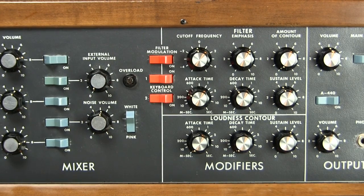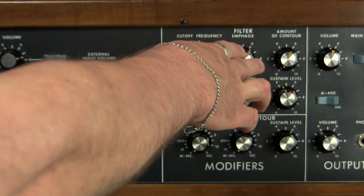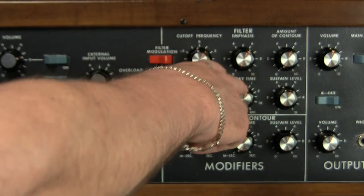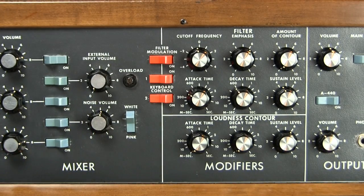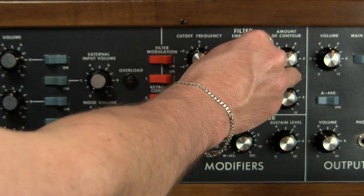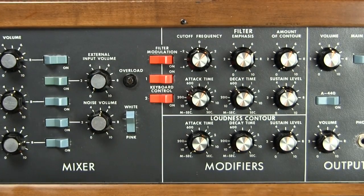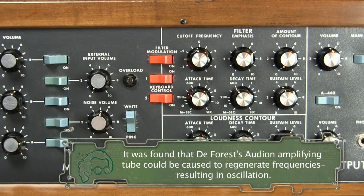Filter self-oscillation happens when we are accentuating the frequencies at the cutoff point with the resonance or emphasis, and we accentuate them to the point where they begin to oscillate — those frequencies create a standing wave. This is the same sort of thing that was happening with Lee DeForest's Audion tube that led to the discovery of the possibility of oscillators in the first place.